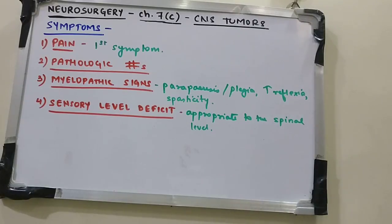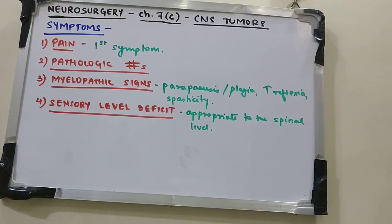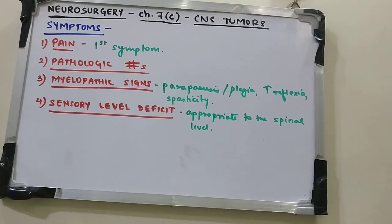The first symptom of extradural tumors is pain in the vertebral area, usually in the thoracic or lumbar region. The pain is characteristically exacerbated by recumbency, especially at night, and by movements, coughing, or sneezing — anything that increases intrathoracic or abdominal pressure.